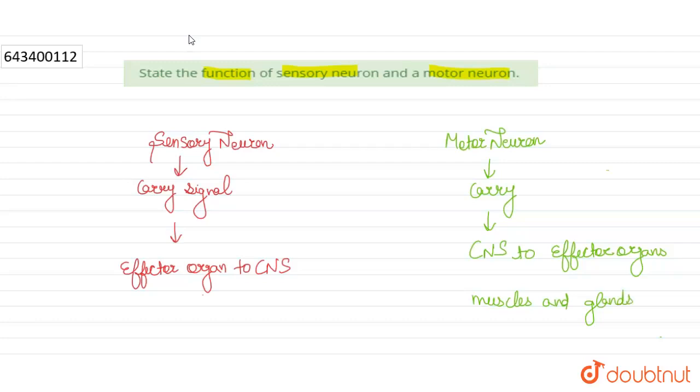On the other hand, sensory neurons are present in eyes, skin, ears, tongue, and nose. Thank you.